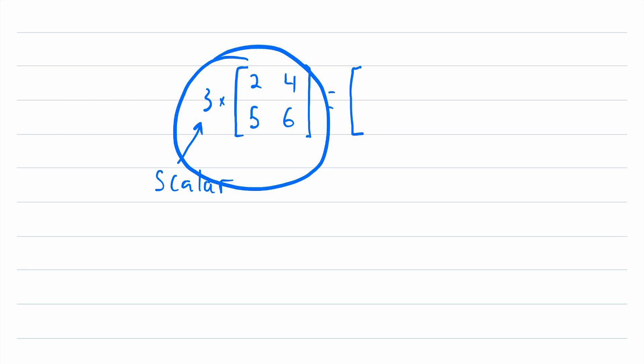So three multiplied by this matrix gives us another matrix with the exact same dimensions. And the entries are, actually I'll write it like this, three times two, and then three times four, and then three times five, and then three times six.